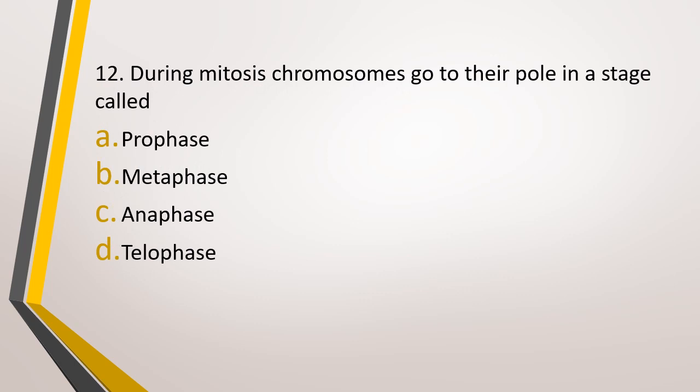Question number 12. During mitosis, chromosomes go to their poles in a stage called, in which of the following four stages does the chromosome go to their respective poles? Option A: prophase, option B: metaphase, option C: anaphase, or option D: telophase. The correct answer is option C, in anaphase, the chromosomes move towards their poles.